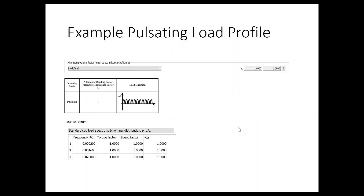For a pulsating load profile example — this is a standardized load spectrum you can reference — you can see in the pulsating direction we have positive torque and positive speed, which means we're loading the right flank. There are no alternating or negative loads, and no oscillating. This is a straight RMS load looking at pulsating loads.